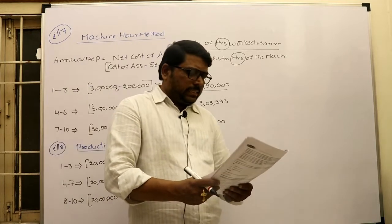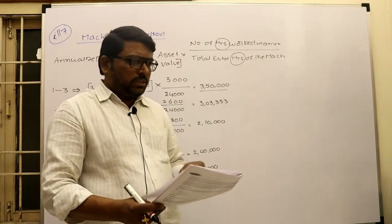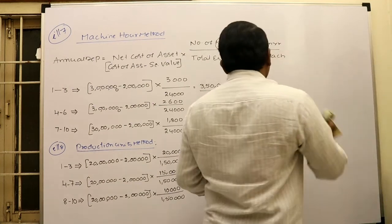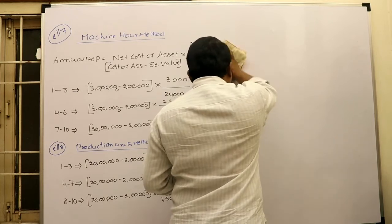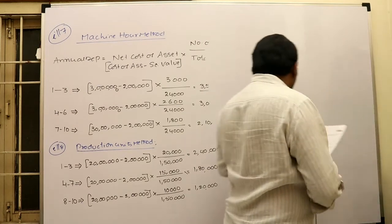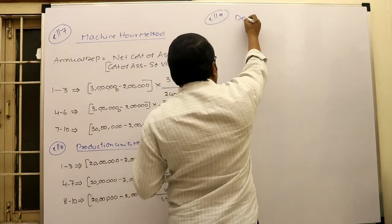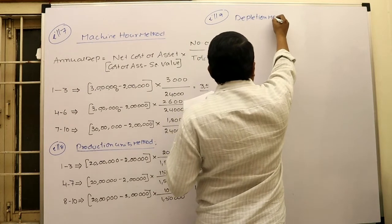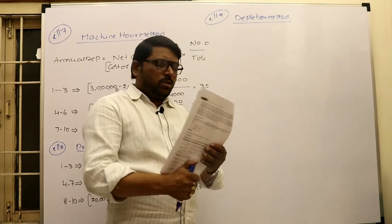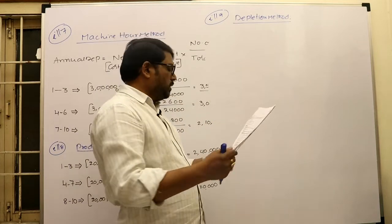Next is the Depletion method. This method is applicable to natural resources like coal mines, minerals, etc. The depletion method formula and calculation are very similar to the production units method — there is no great difference. Let us discuss illustration 9.